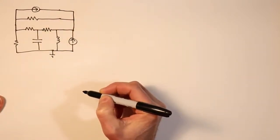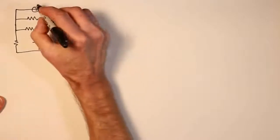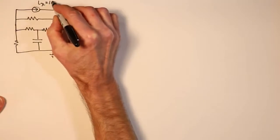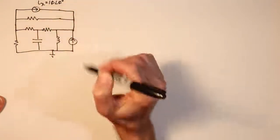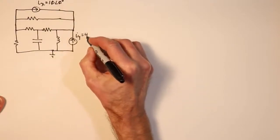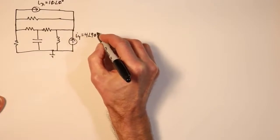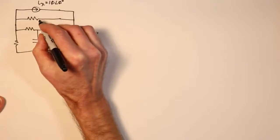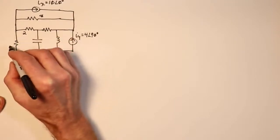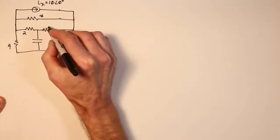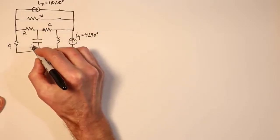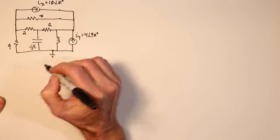Now for some values. This top current source, which I am going to call Ix, will be a 10 amp current source — 10 at an angle of zero. The second current source we'll call Iy, and that'll be 4 amps at an angle of 90 degrees. Resistor values: 8 ohms, 2 ohms, 4 ohms, and 1 ohm in the middle. The capacitor will be minus J5, and the inductor will be J10.